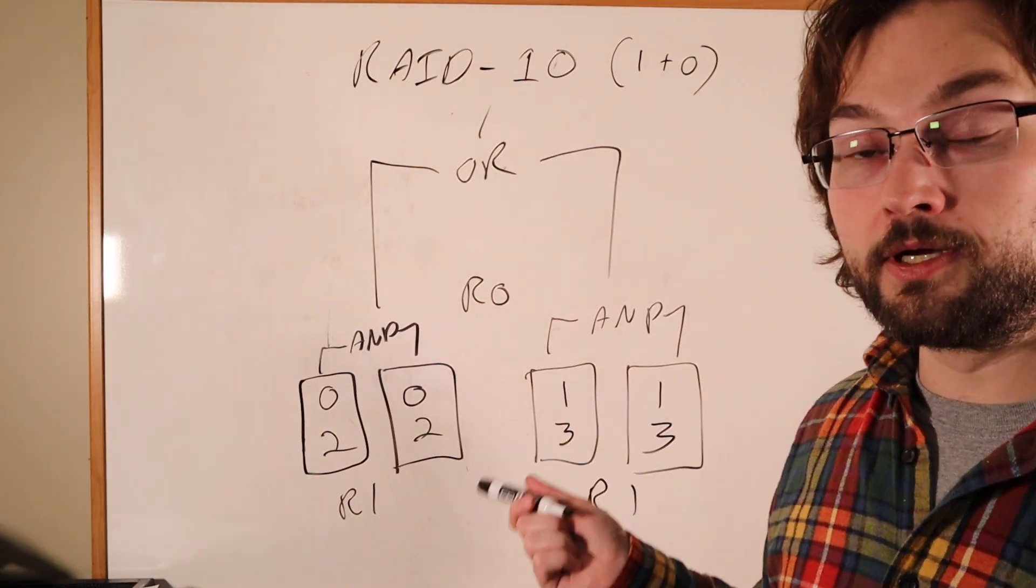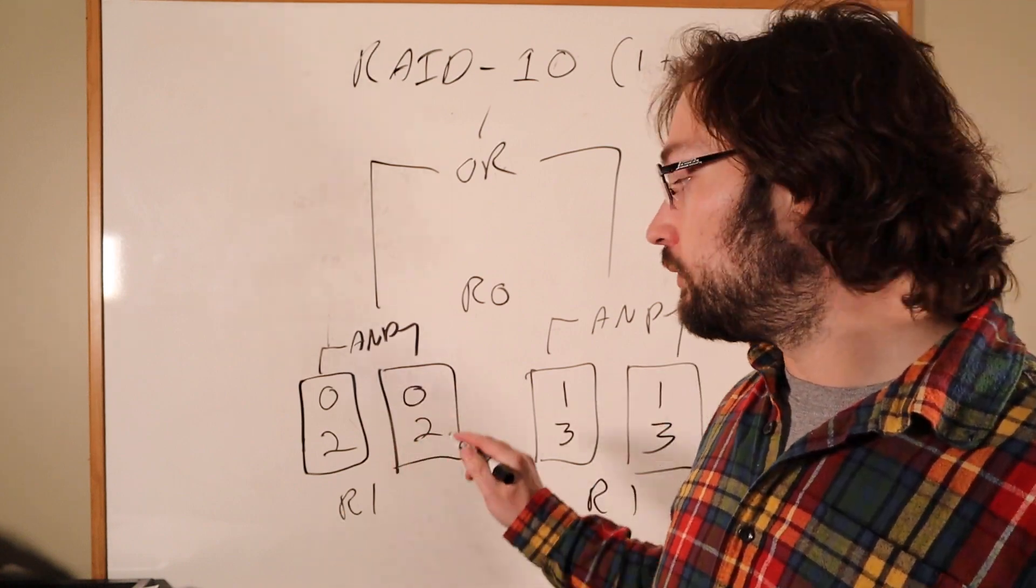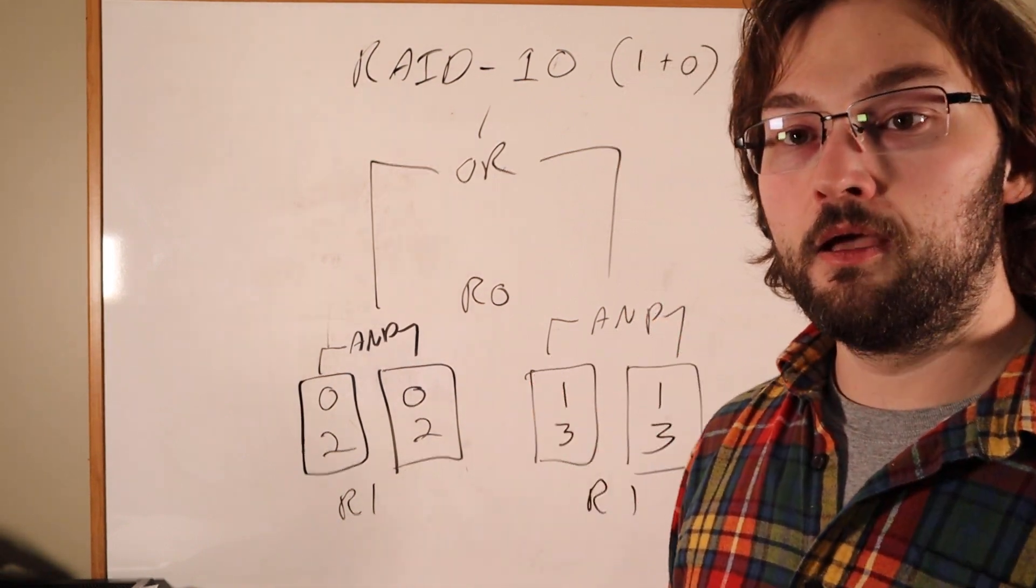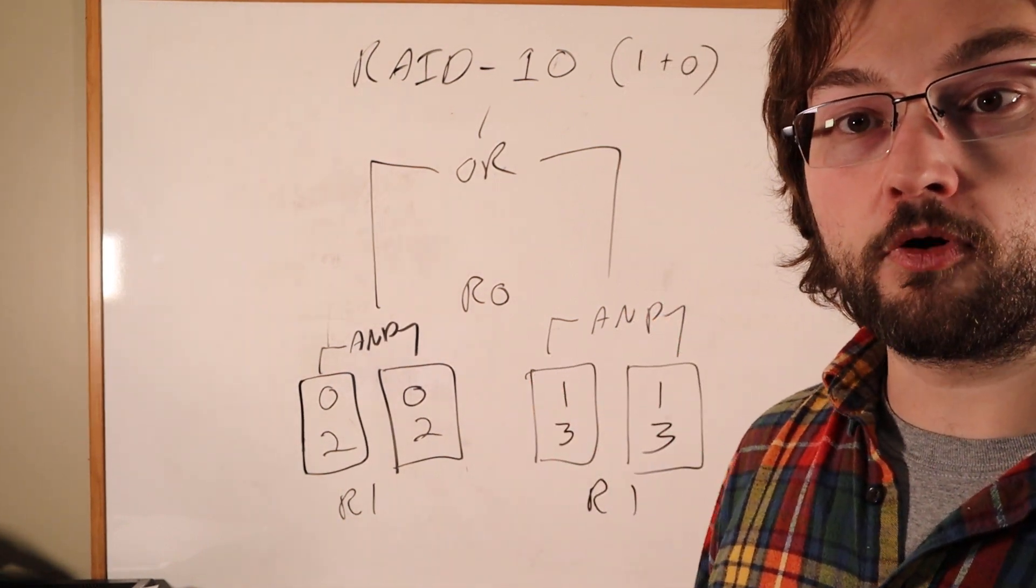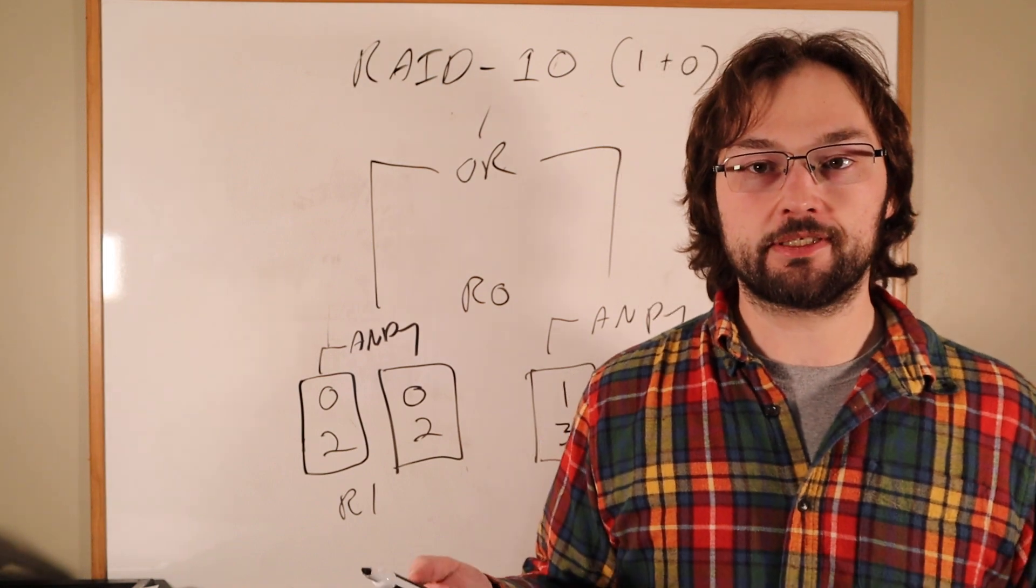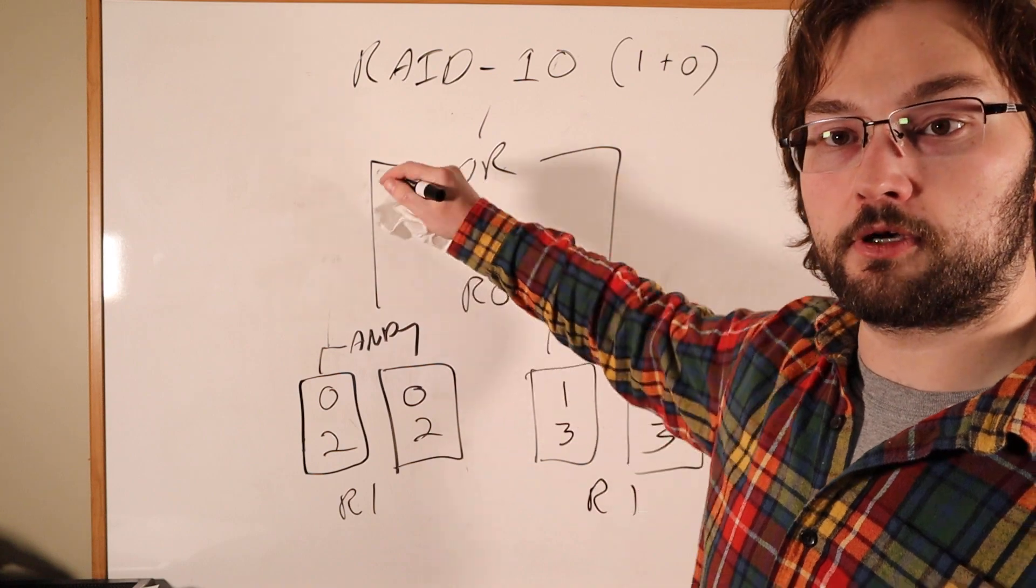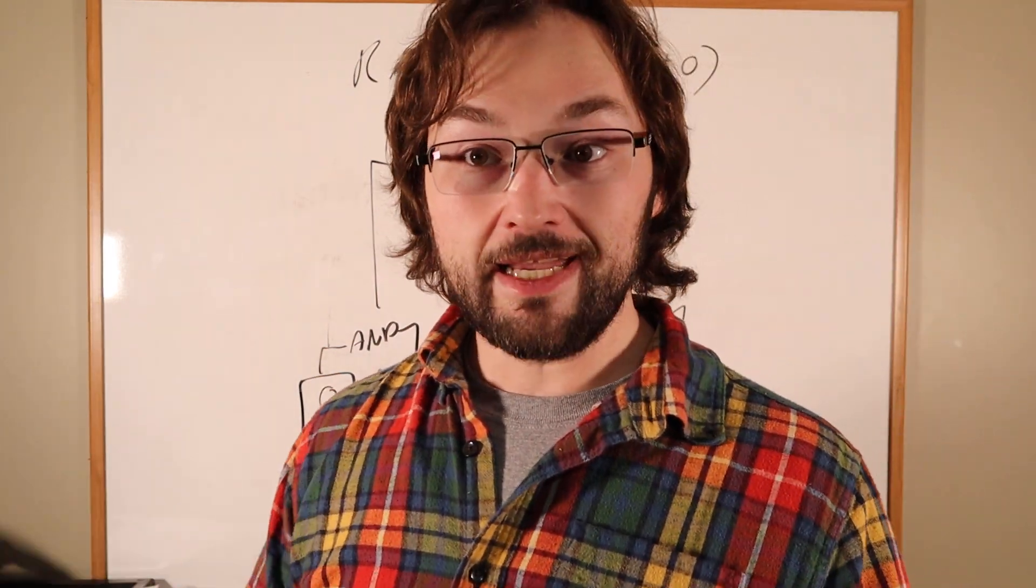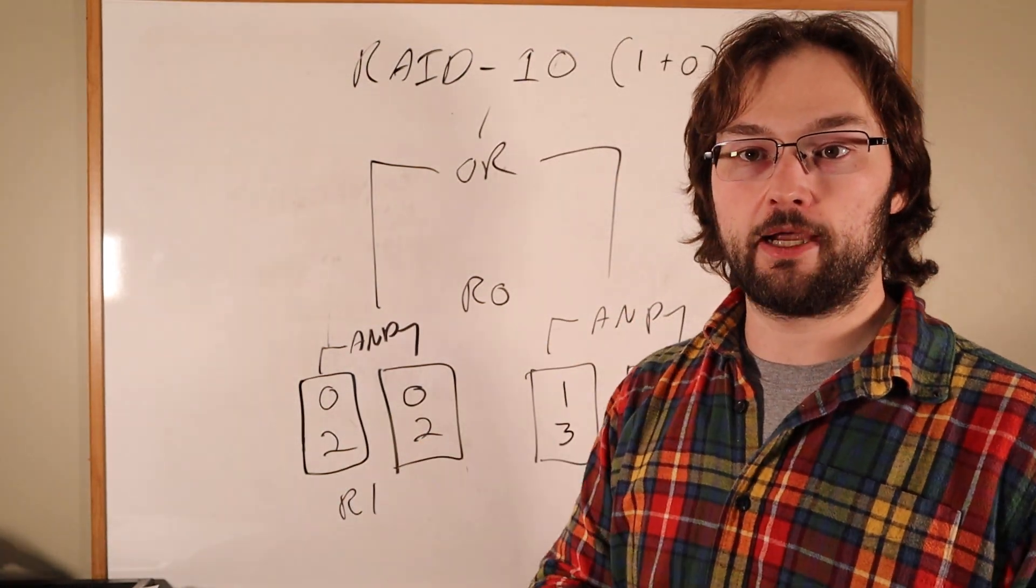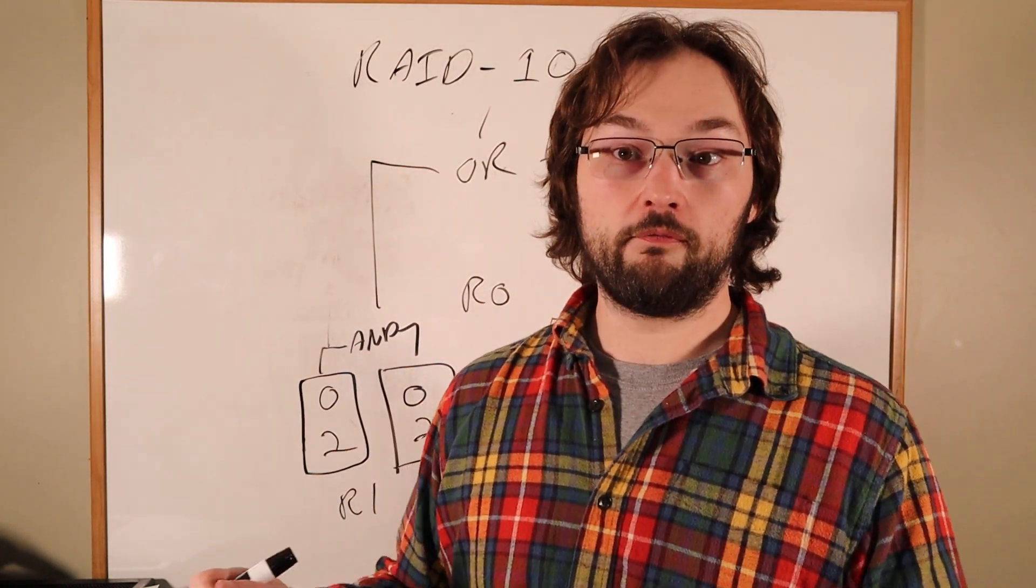What this means is that any one disk can fail without us losing anything. Any one of these four disks can fail. We can swap out the failed disk, put in a new one, and copy it back from the mirror so we can survive one disk failure. We also get a factor of two performance speed up on writes from our RAID 0. So this goes faster than just a normal RAID 1 would have. And if we want to do reads and our RAID controller is clever enough, we'll get to stack the performance benefits of RAID 1 and RAID 0 on reads.